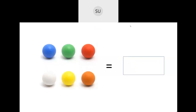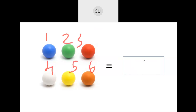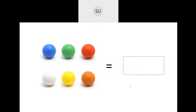Now in this picture how many balls are there? We have 1, 2, 3, 4, 5, 6. So we have a total of 6 here.